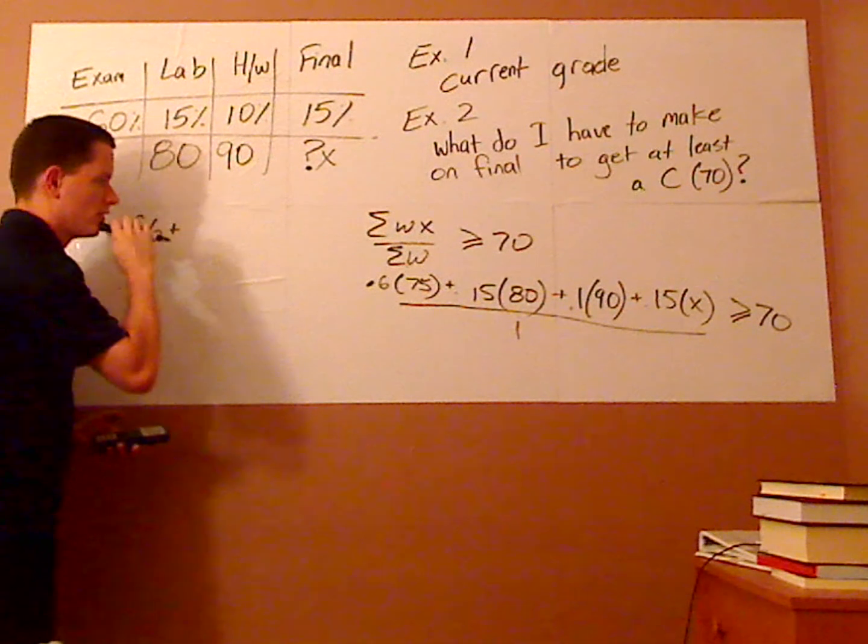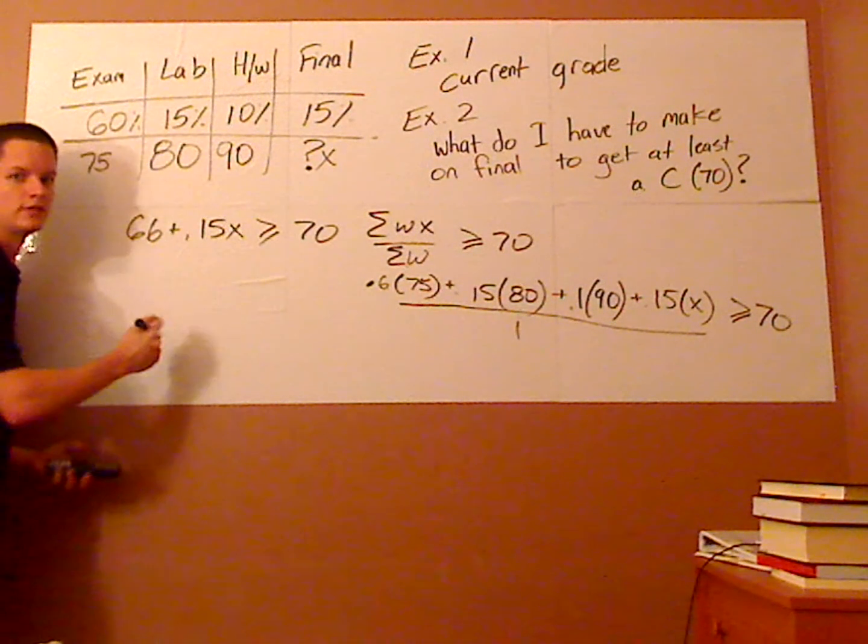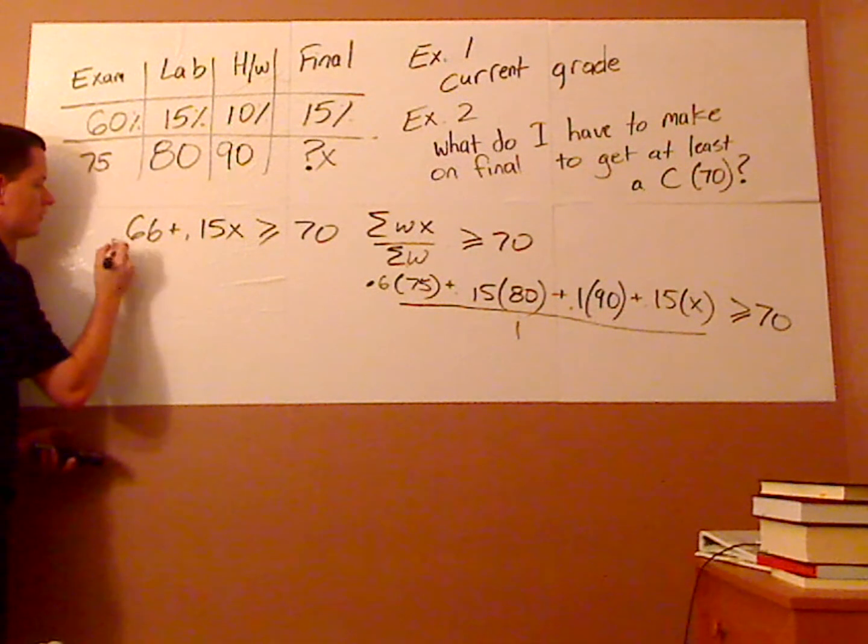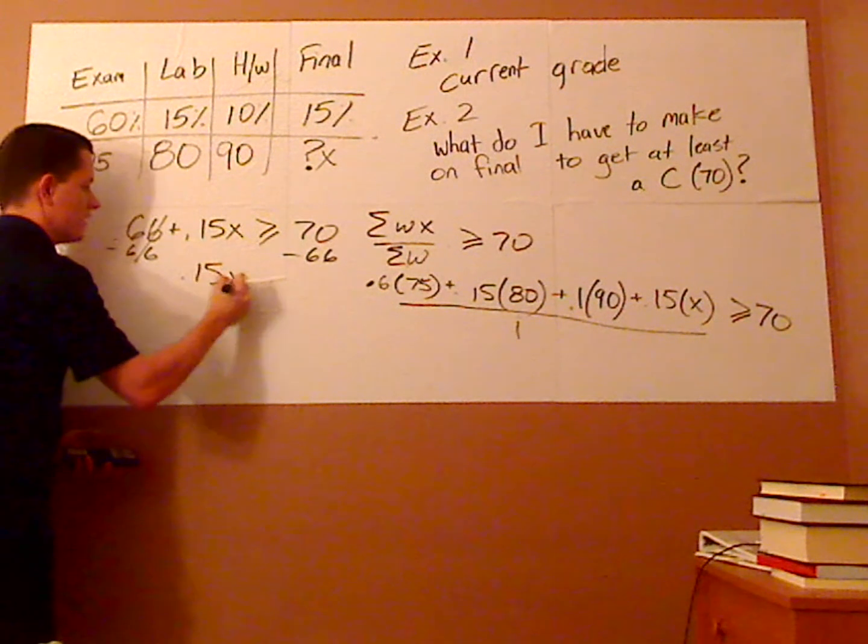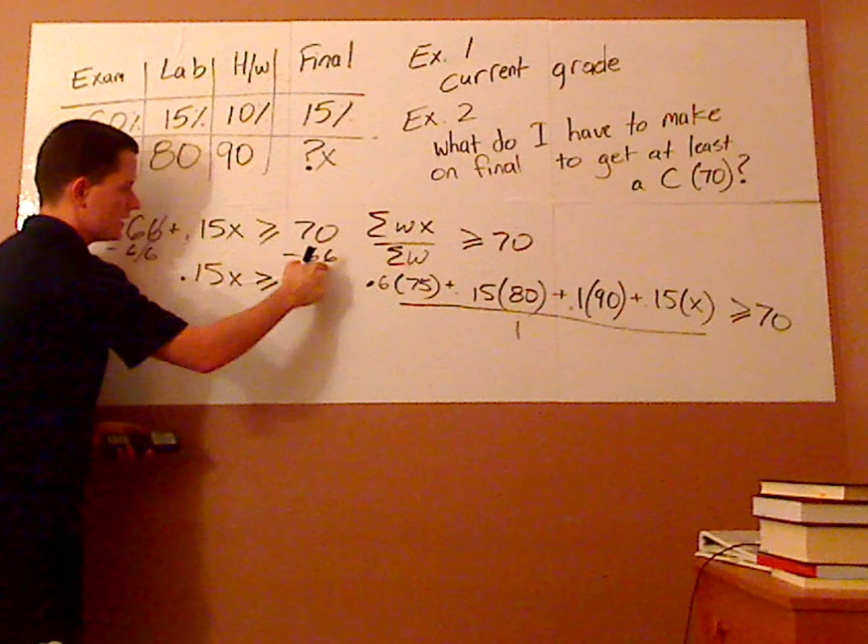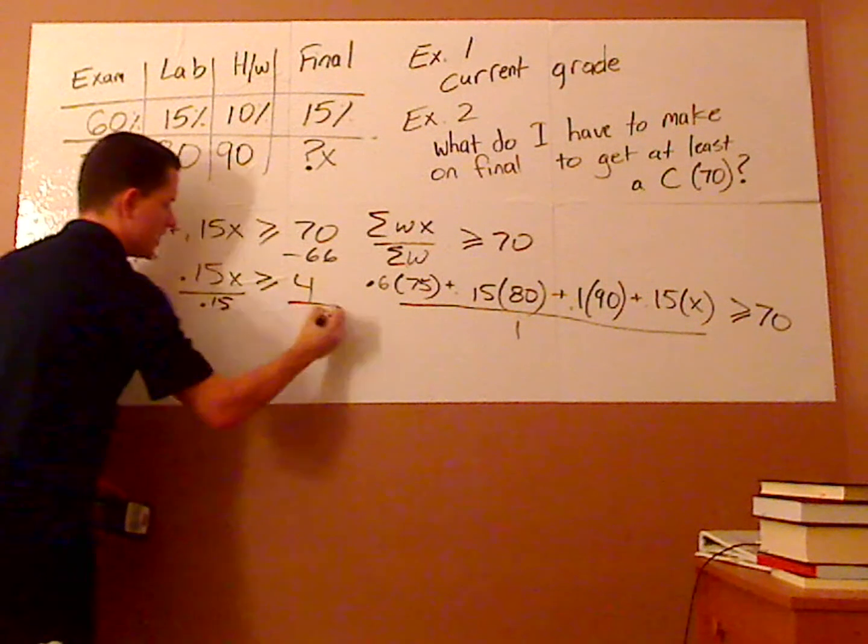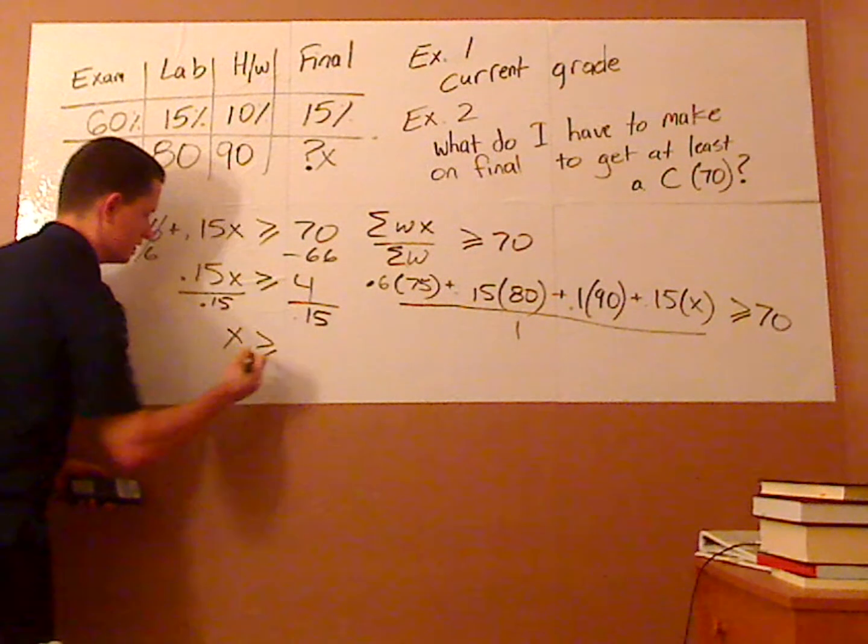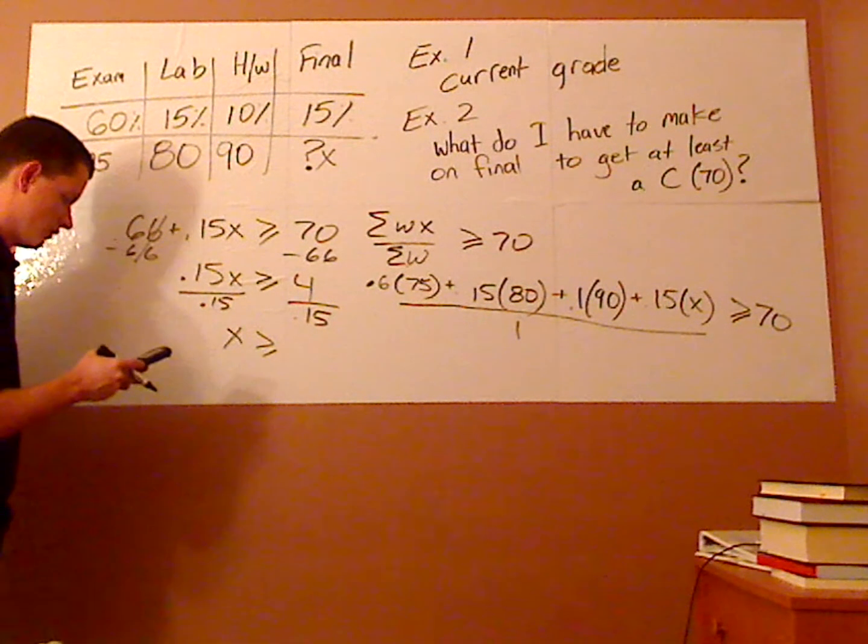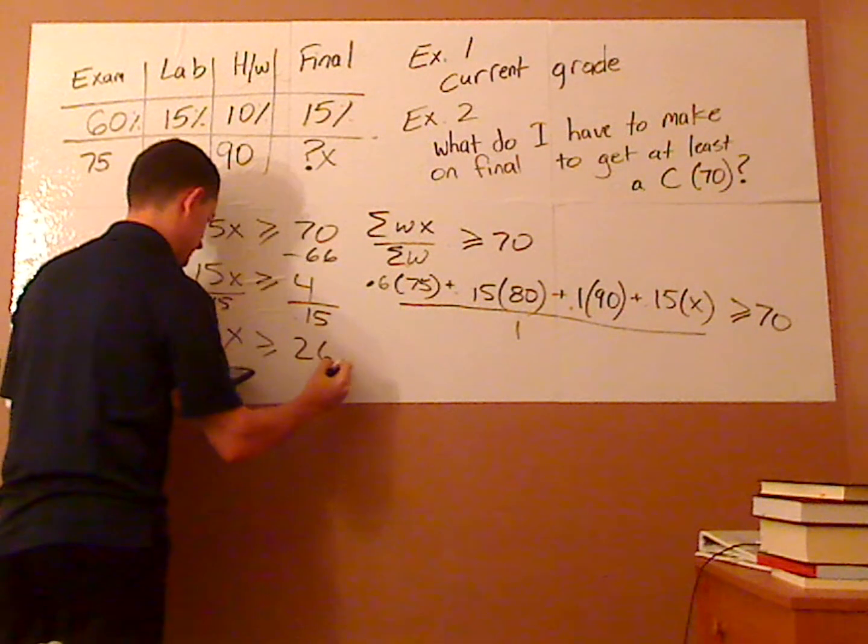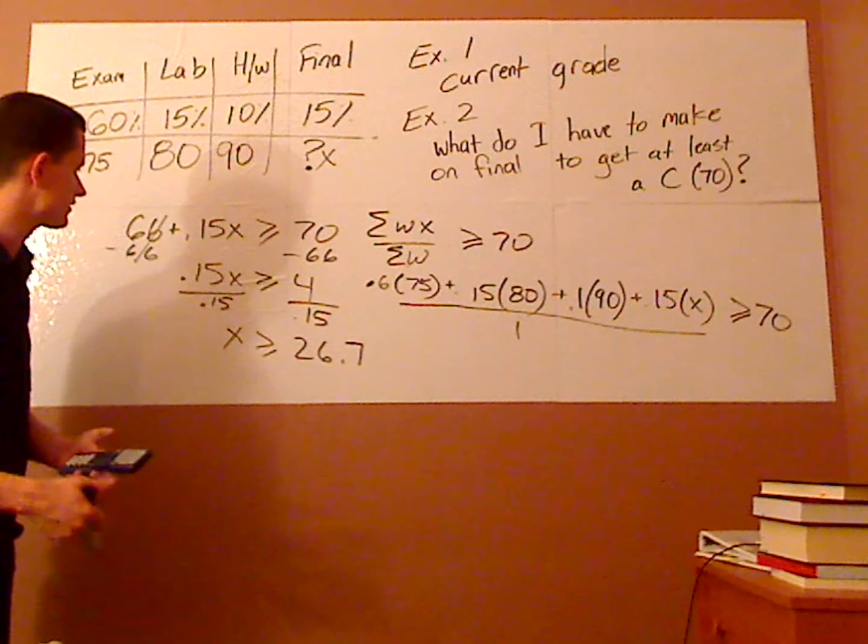So, what I want to do next is you're solving the inequality. So, you're going to subtract both sides by 66. That cancels. You have 0.15 X greater than or equal to 70 minus 66, which is 4. And then divide both sides by 0.15. So, X is greater than or equal to 4 divided by 0.15. That gives me 26.7. I'm just going to round it up.